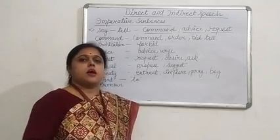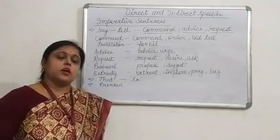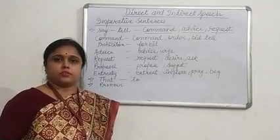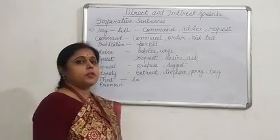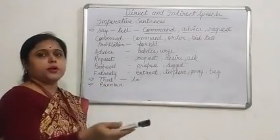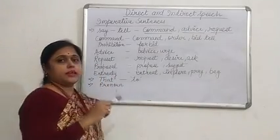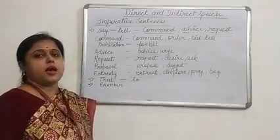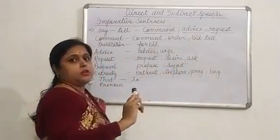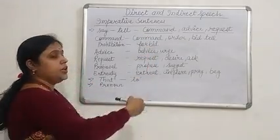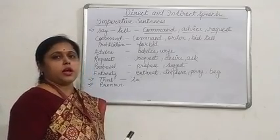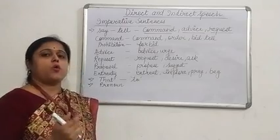Imperative sentences are sentences which express orders, commands, suggestions, advice, etc. One thing you have to remember: whenever we use the word 'say', it is going to become 'tell' or 'told'; 'said to' becomes 'told'. In that place we have to use either 'command', 'advise', or 'request', depending on what type of sentence it is — to replace 'say' or 'told'.